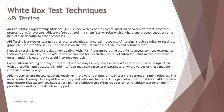Negative testing is often crucial when dealing with APIs. Programmers who use APIs to access services external to their own code may try to use API interfaces in ways for which they are not intended. We always try with many negative scenarios to see what happens if a user does something other than expected — does the system behave unexpectedly or fail to respond? It is really important to look into the negative side and make sure everything happens as per expectation.